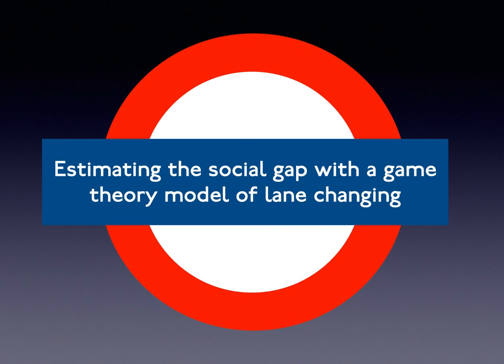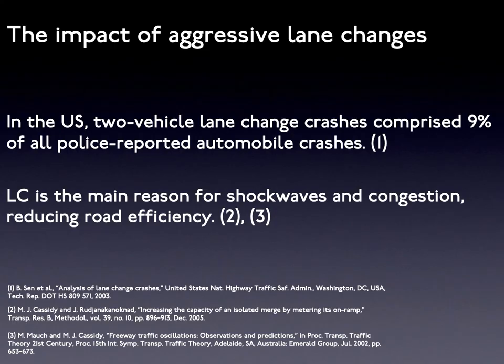So how do people make choices when their individual interests have a conflict with social benefits? When considering aggressive behaviors that are beneficial to selfish drivers in lane-changing scenarios, risky lane changes could have significant impacts on the whole traffic system. For example, in the US, two-vehicle lane-change crashes comprised 9% of all police-reported automobile crashes, and it is also the main reason for shock waves and congestion, which leads to a great reduction in road efficiency.